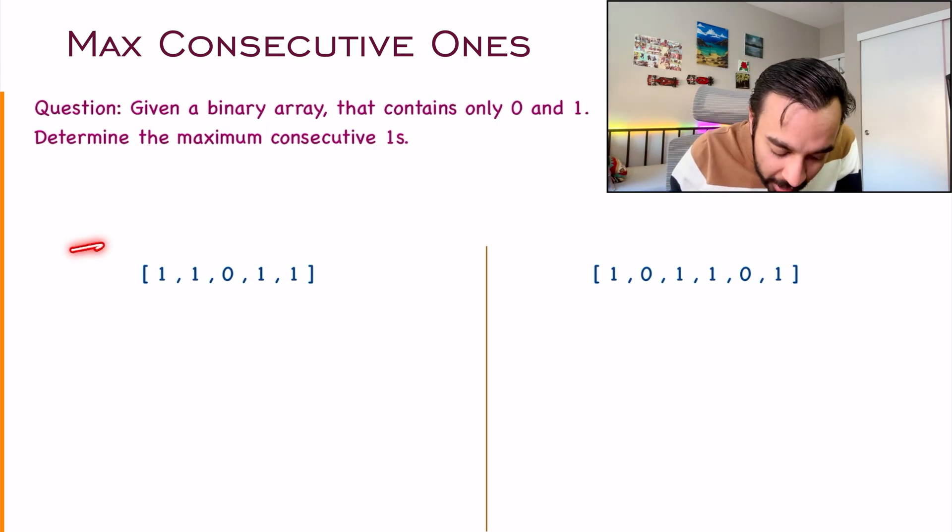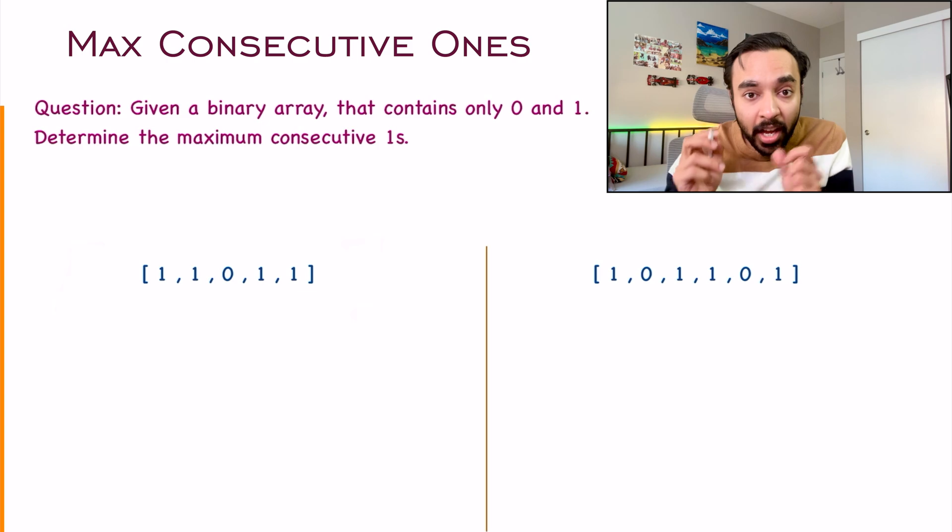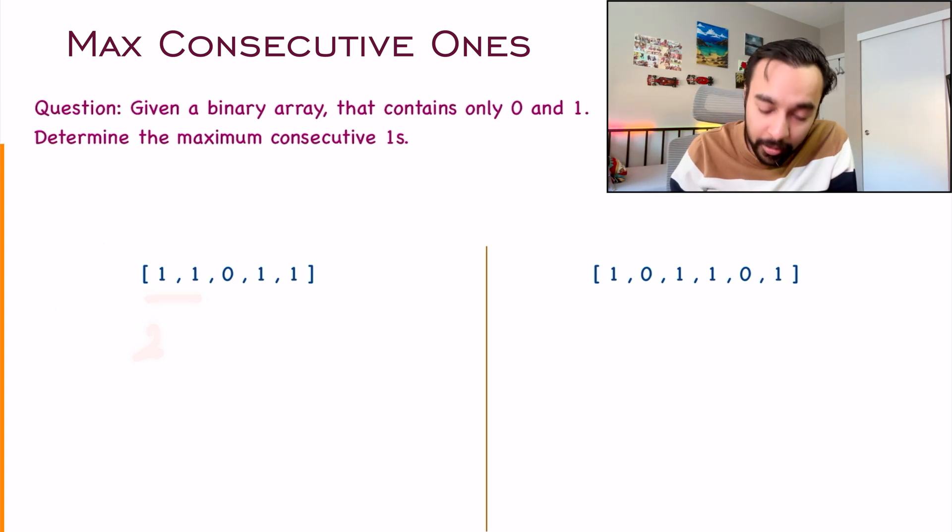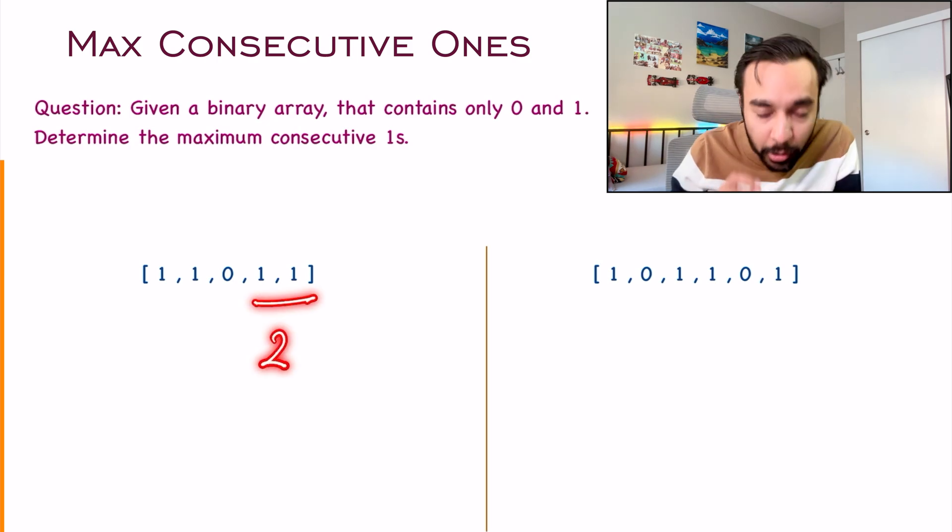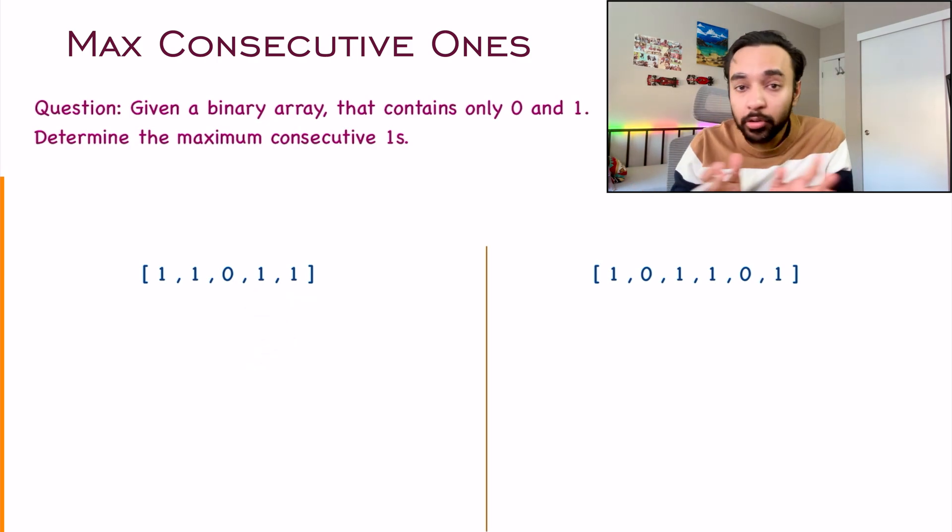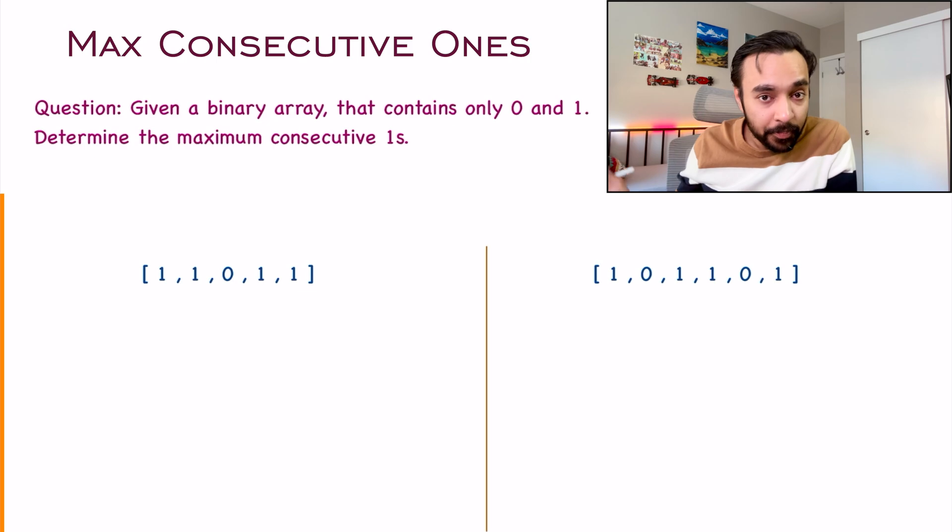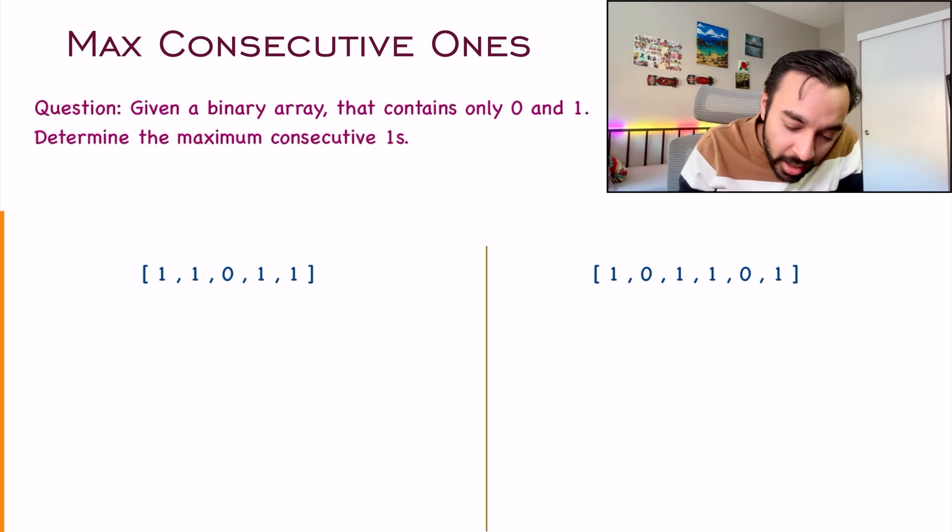So for example, if you look at the first test case, how are you finding the consecutive ones? I have two consecutive ones over here and I have two consecutive ones over here. So out of them, what is the maximum number? There are still two, right? So for the first test case, you can say that two is your answer.